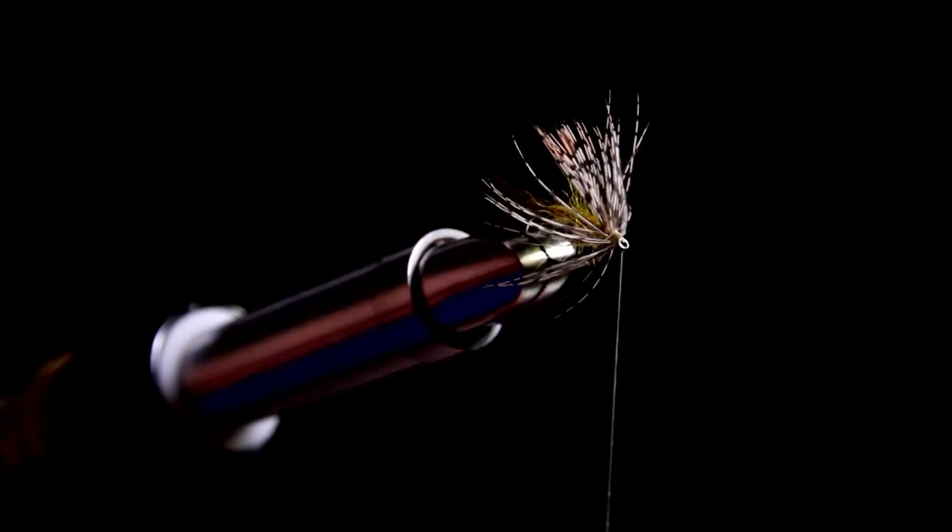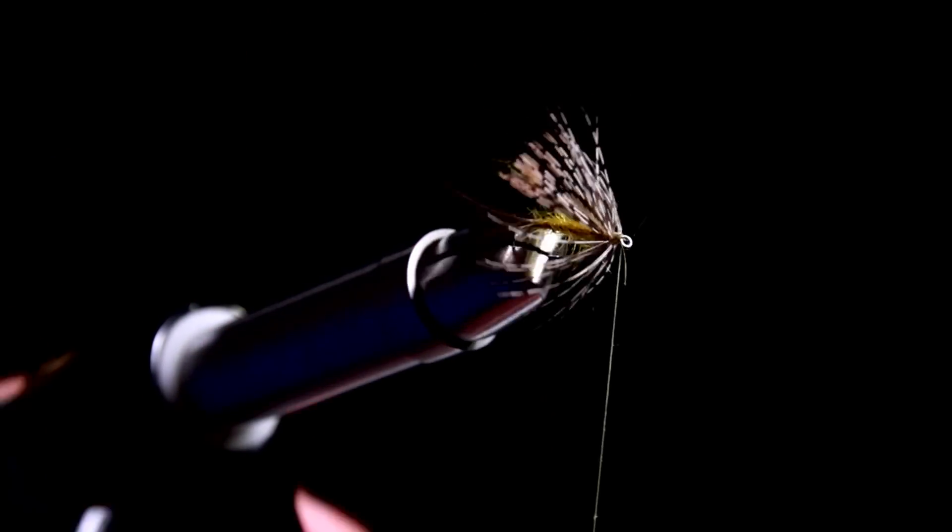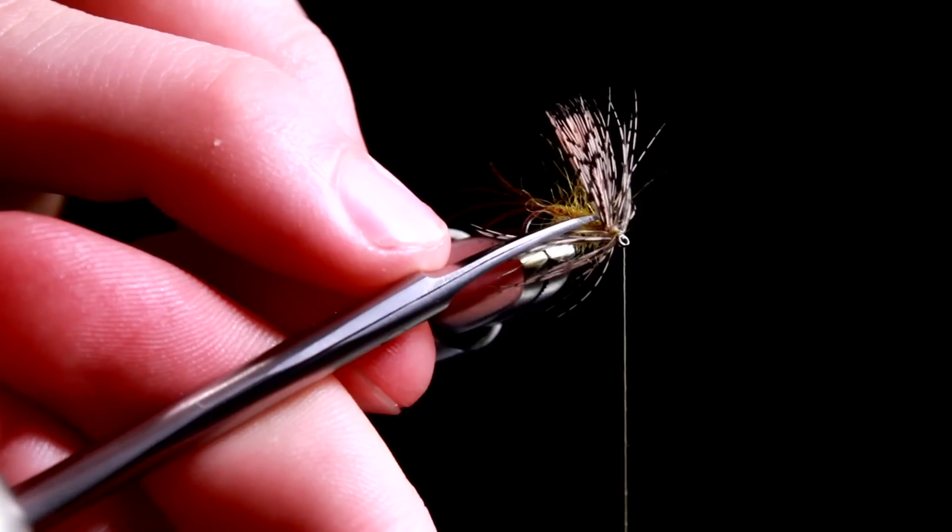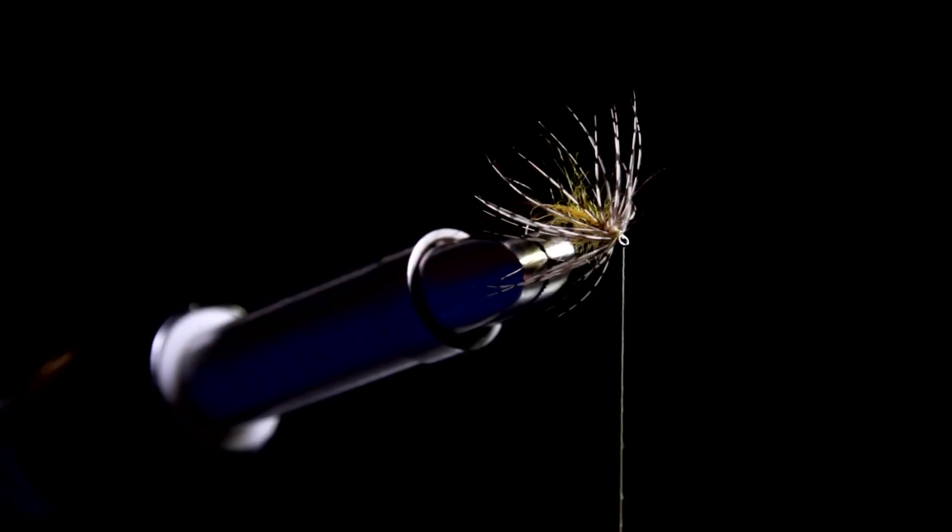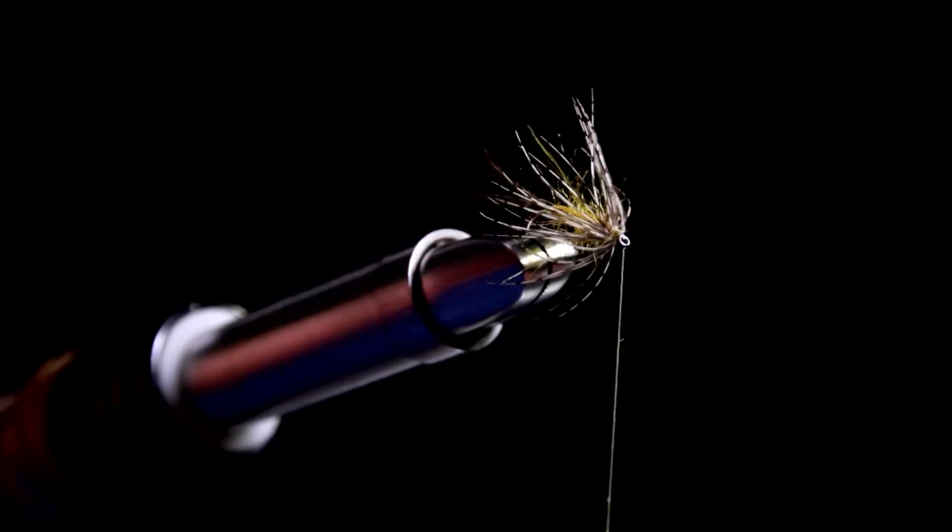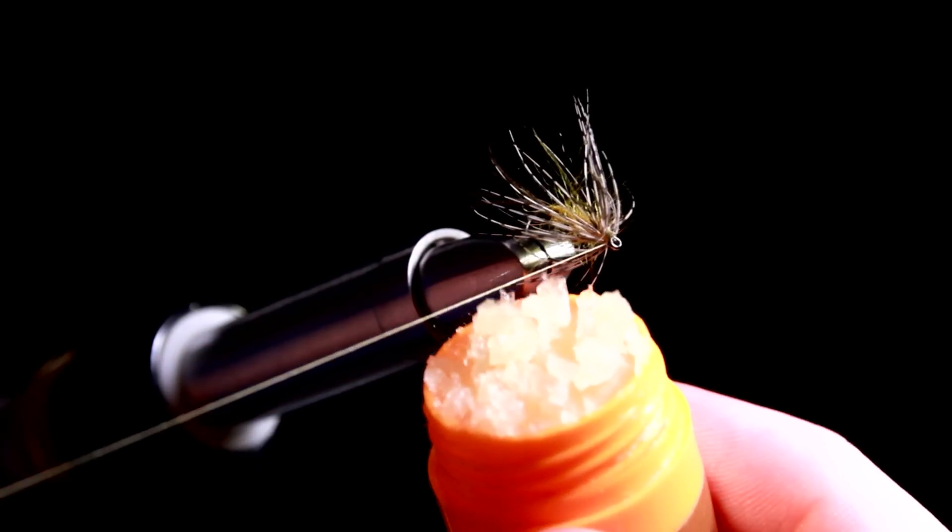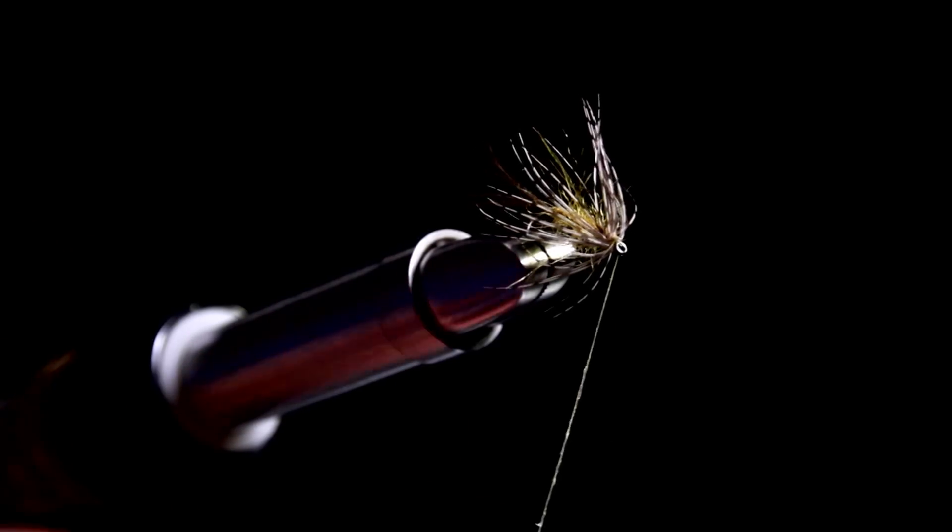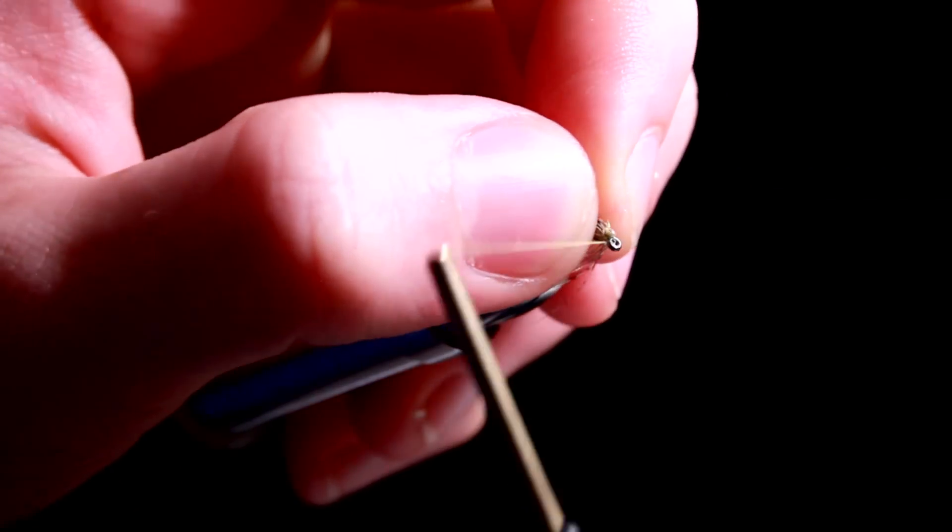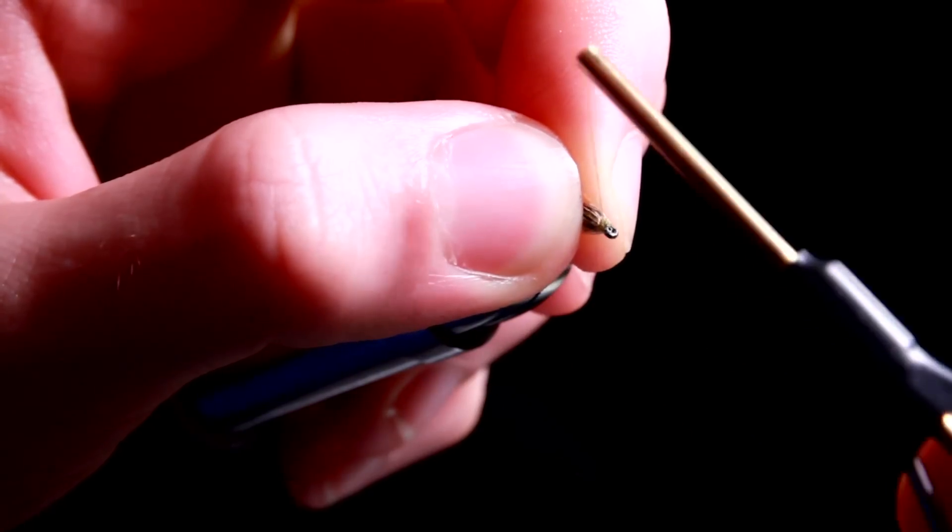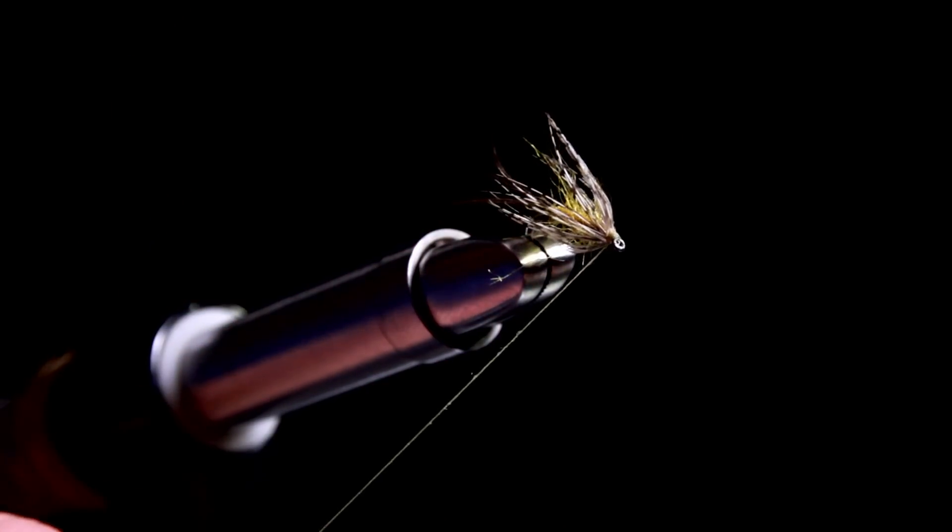And there we have it. If we are sure that the hackle is like we want it to be, we can cut the excess off. Eventually, if you're using gossamer silk, which is a rather thick thread, you might want to wax it. It really helps to make a neat head. Perhaps you want to secure the hackle further by stroking it backwards and folding it down with a thread like that. And then I do my whip finish. One knot and two knots.